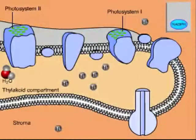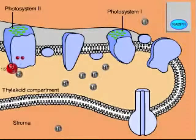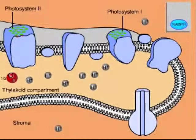Photosystem 2 replenishes its electrons by splitting water. Hydrogen ions and oxygen are released into the thylakoid compartment. This is where the oxygen gas generated by photosynthesis comes from.